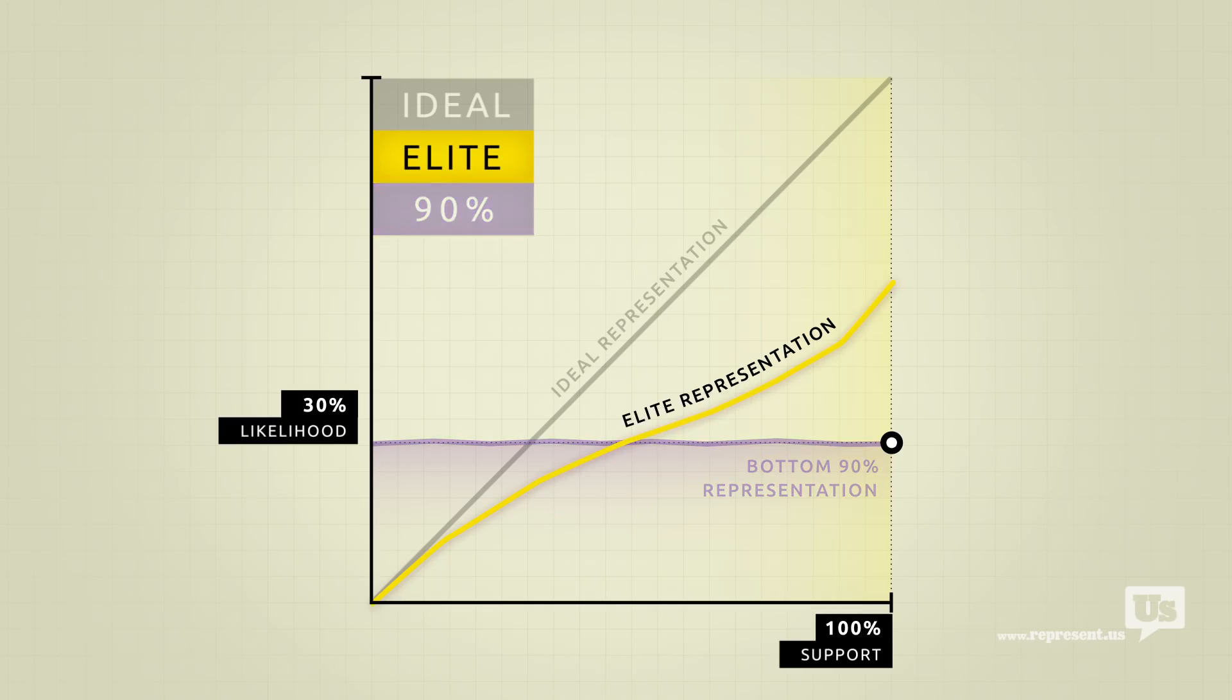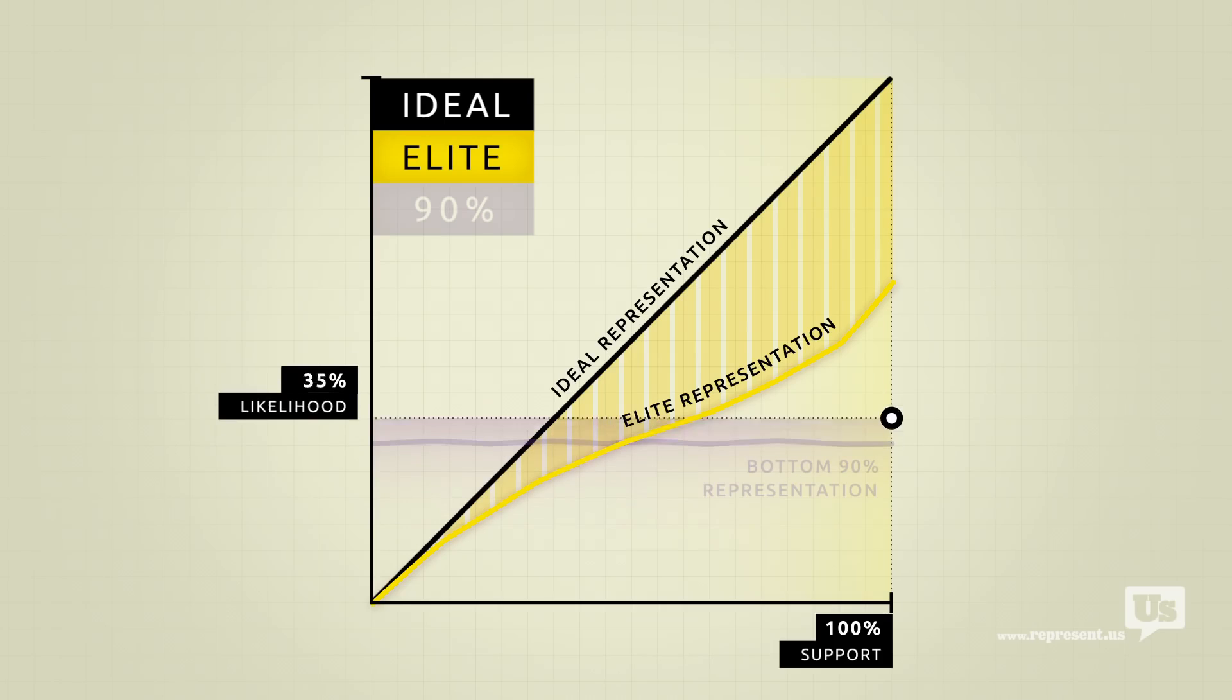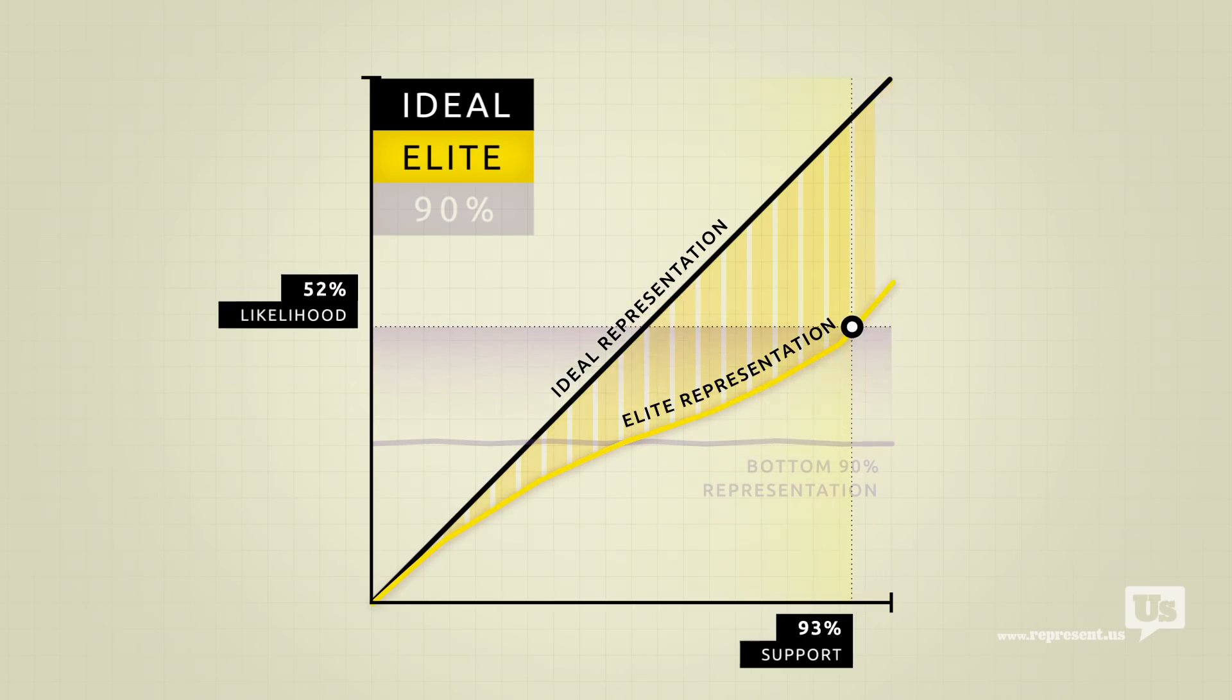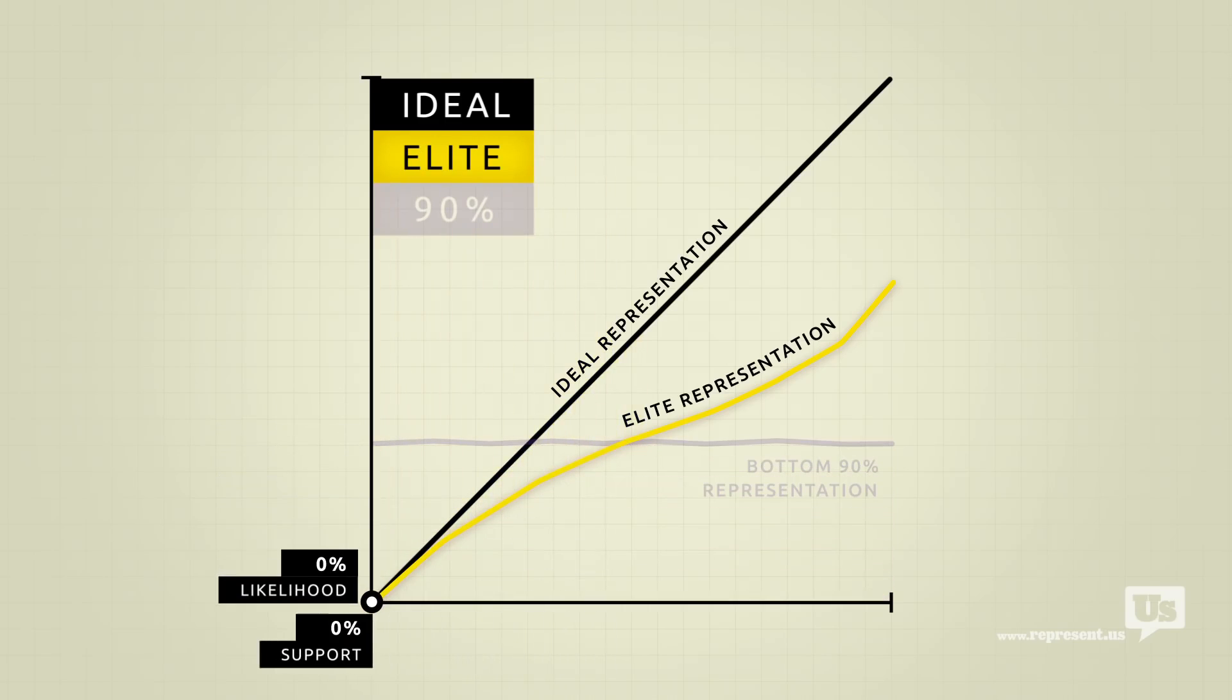Look at how much closer their line is to the ideal. When they want something, the government is much more likely to do it. And when they don't, they have the power to completely block it from happening, no matter how much the rest of the country supports it. They get what they want, and guess who ends up paying for it?